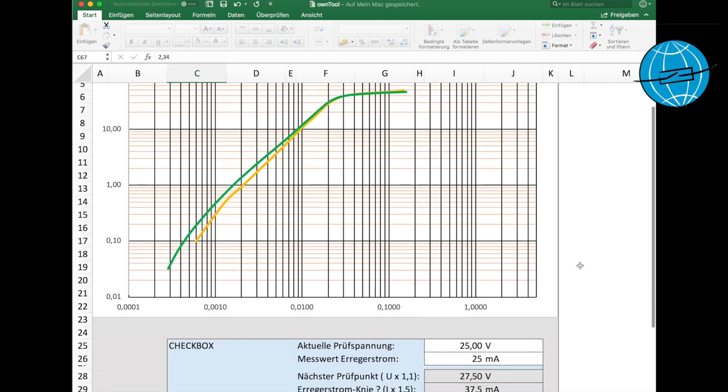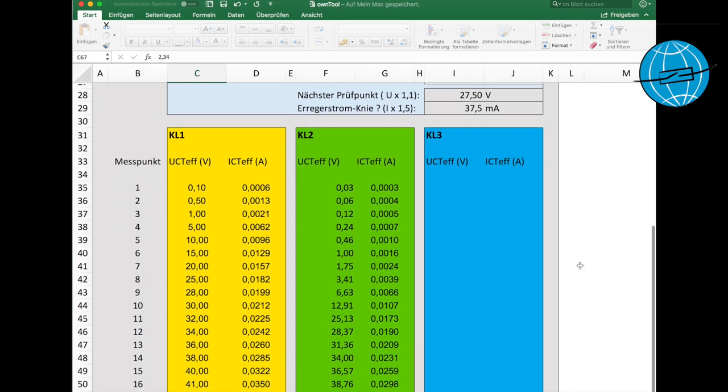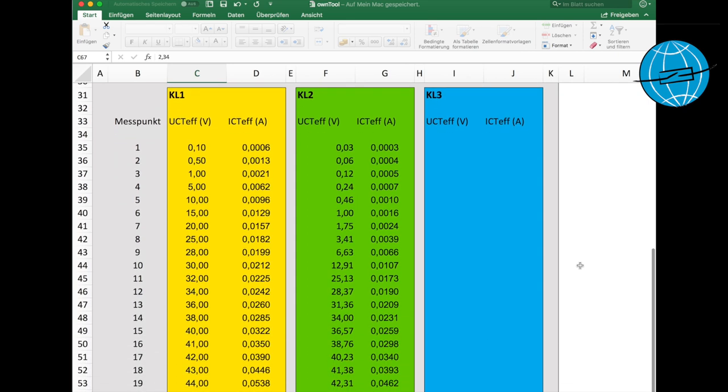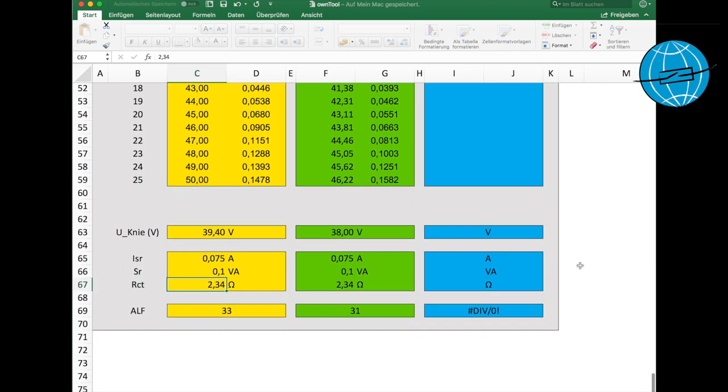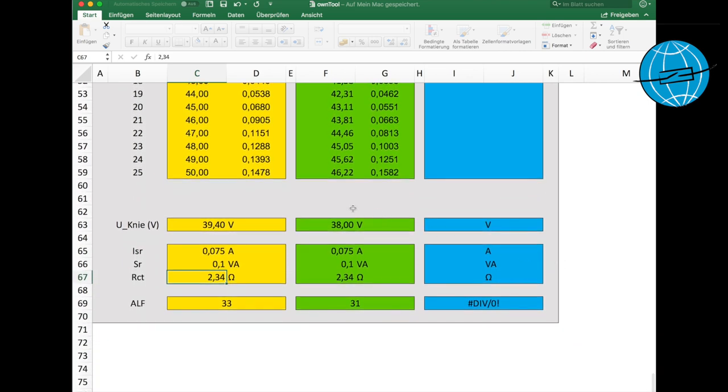You can enter up to three curves in this Excel tool which can be either three cores or three phases. And at the bottom you can get the accuracy limit factor ALF calculated. Simply enter the knee point voltage, the secondary rated current, the rated power of the core and the winding resistance of the core to obtain the result. I've done this in advance as well and our ALF is about 30 at a rated power of 0.1.